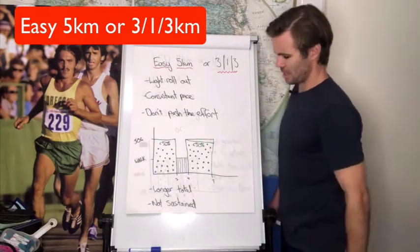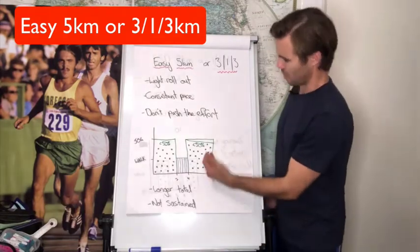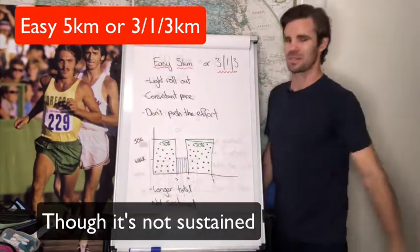So if you're looking at it, it's a longer total. You've got six kilometres of running in total and it's a seven kilometre workout compared to a five, though it's not sustained.